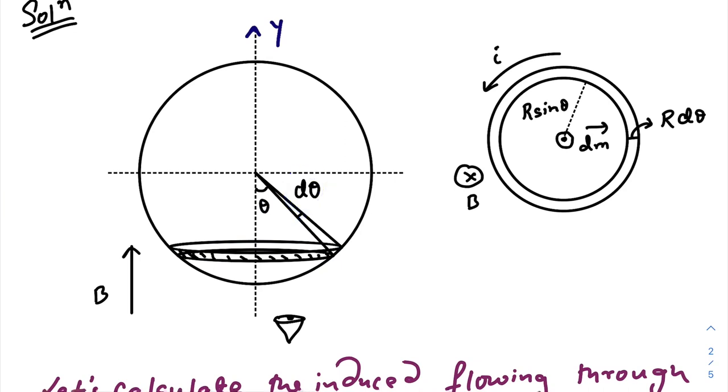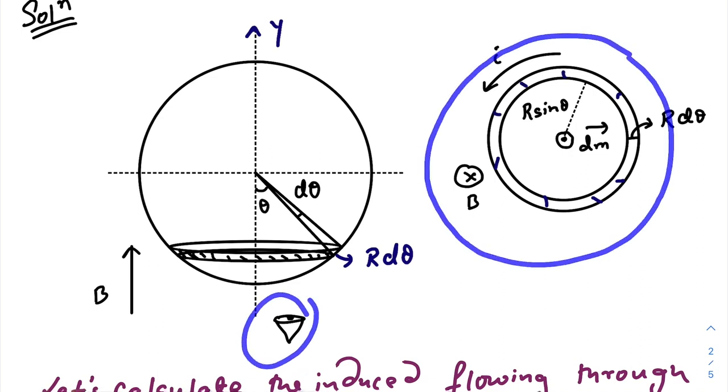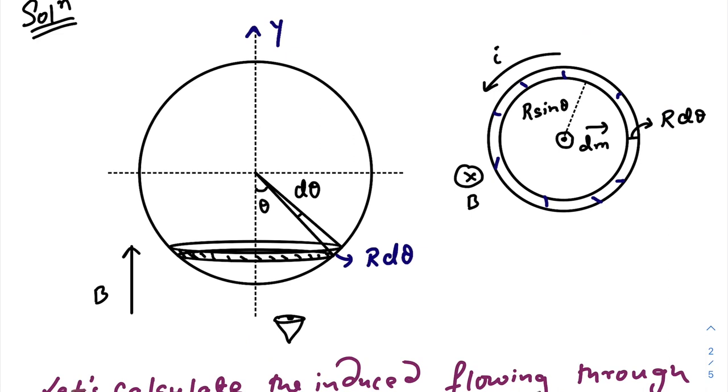So the actual thickness of the ring will be R d theta. Now suppose there is an observer watching this from the bottom of the shell. He will observe this ring in this manner. The view of the ring from this observer will be something like this. And he will observe that the magnetic field is passing through its plane going into its plane. So I have given a cross symbol here.